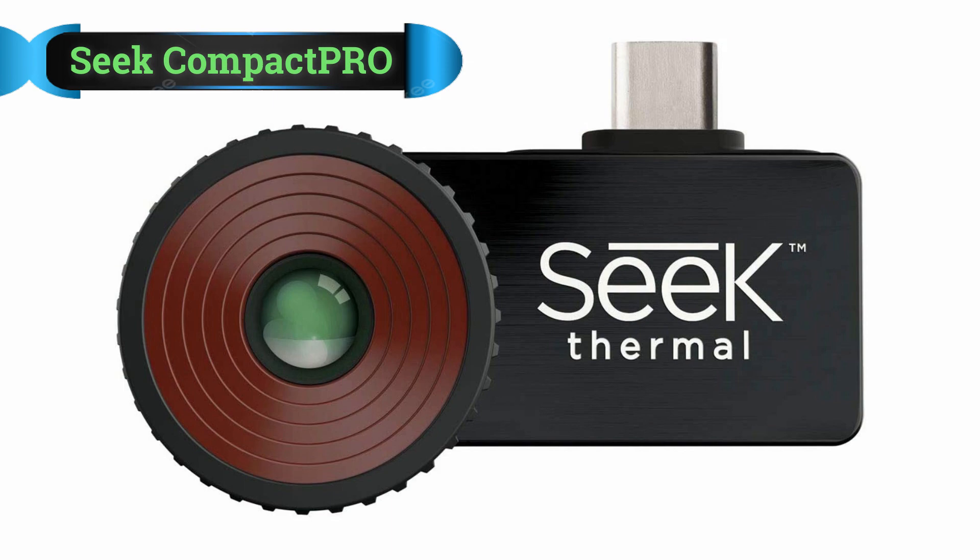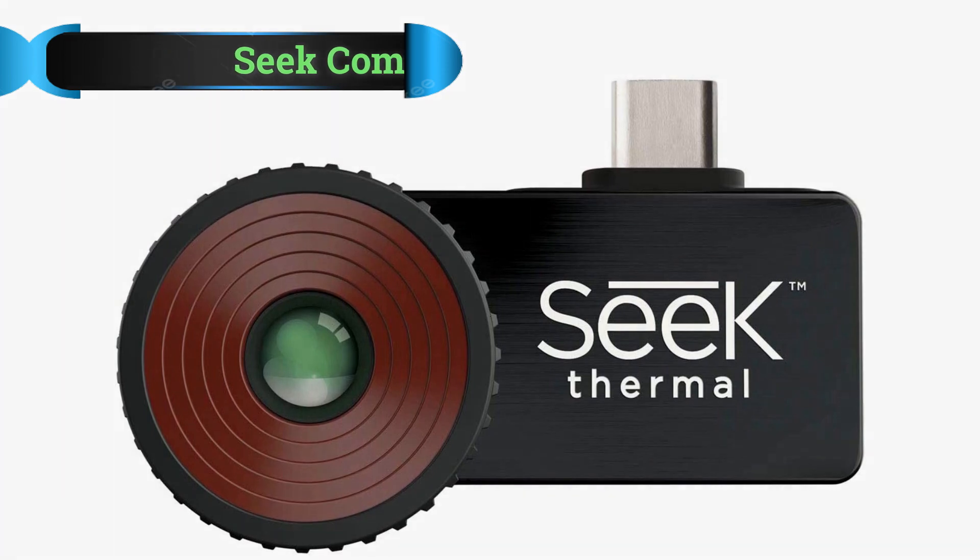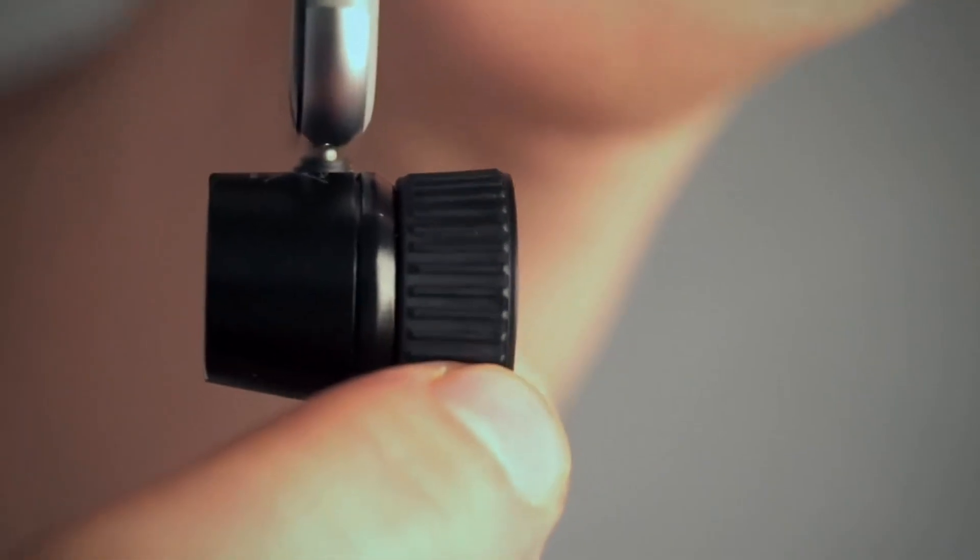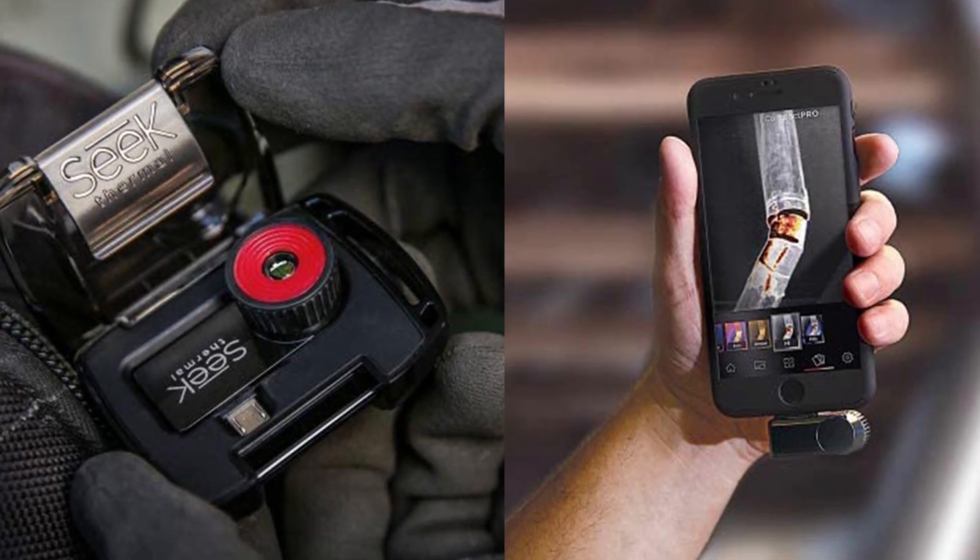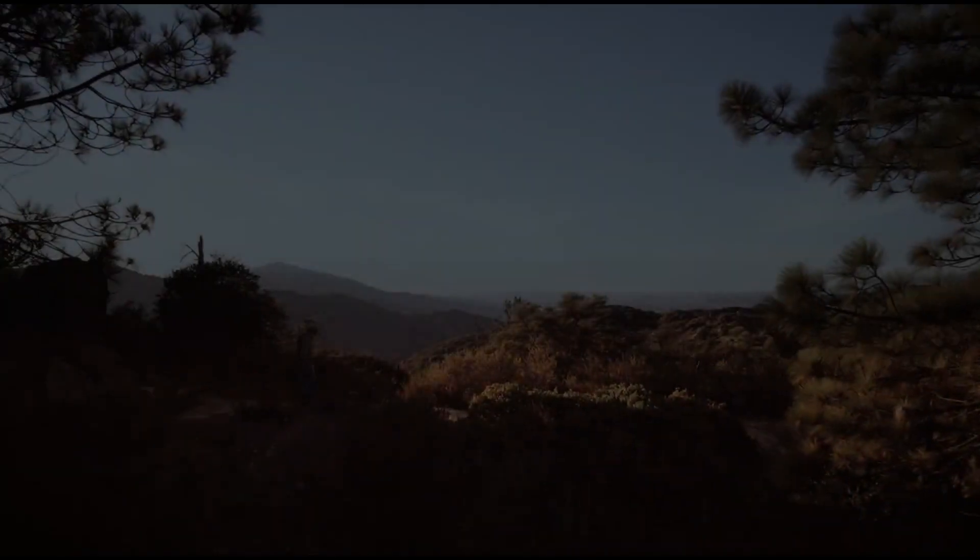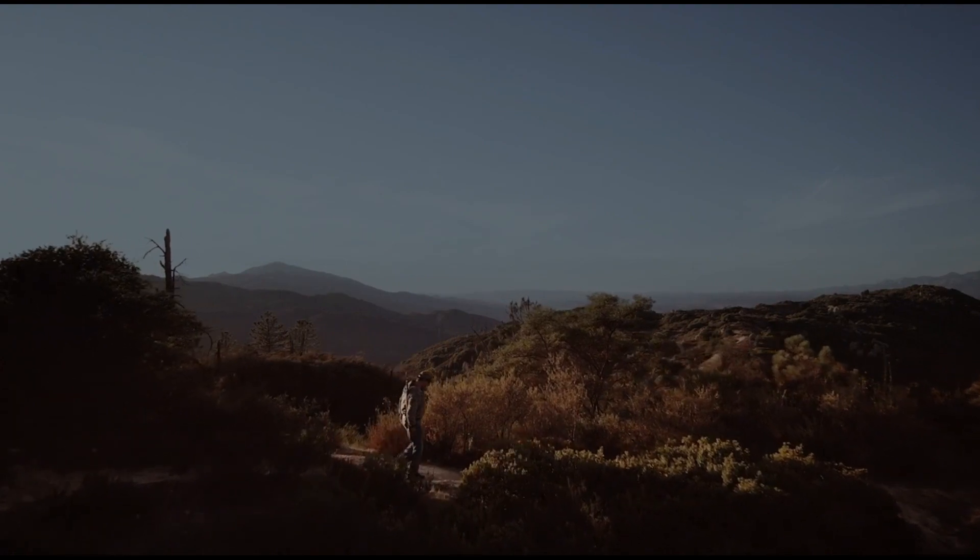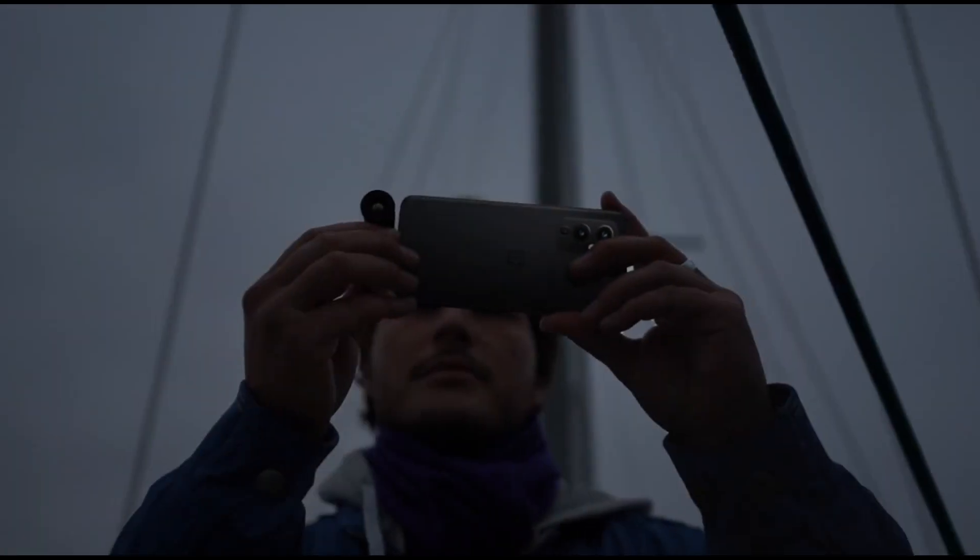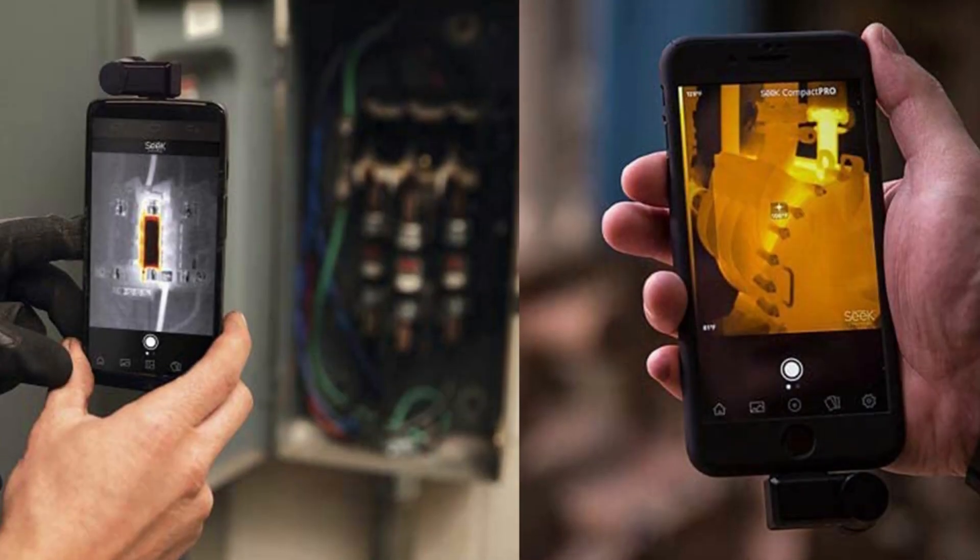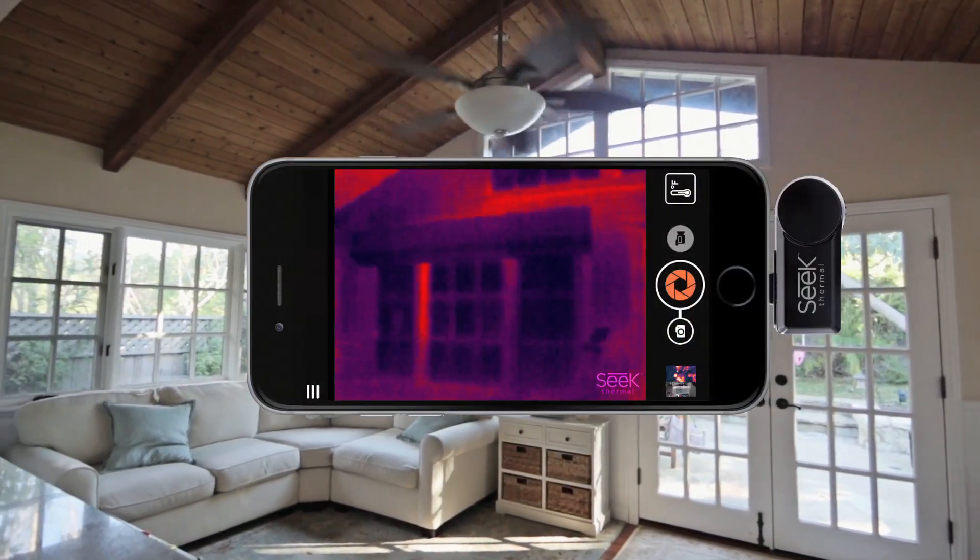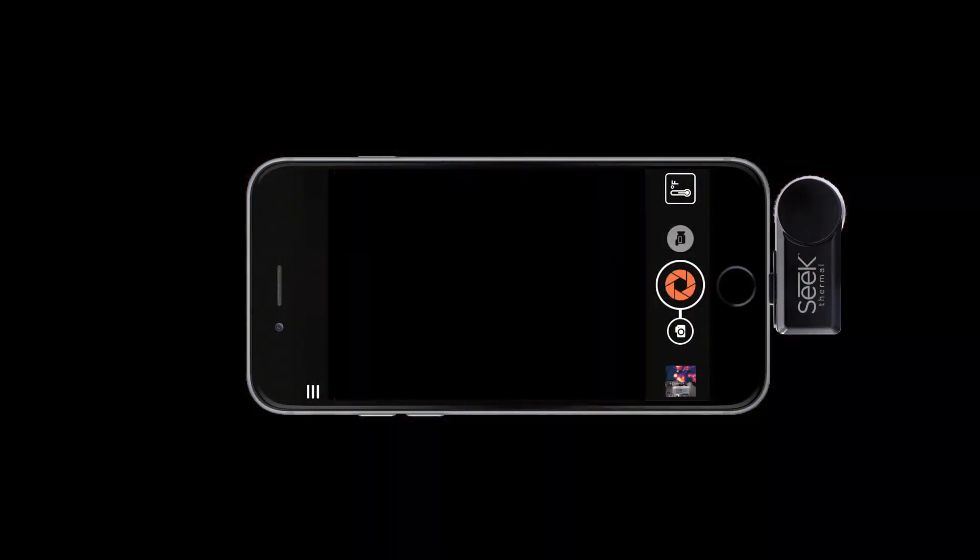Number 1: Seek Compact Pro Thermal Camera. Seek Thermal specializes in creating thermal imaging cameras, and one of their best products right now is the Seek Thermal Compact Pro. If you're dealing with problems like mechanical failures, energy loss, or electrical malfunctions, this high-resolution thermal imaging camera for Android USB-C is the ideal accessory. It transforms your smartphone or tablet into a fully functional thermal camera.